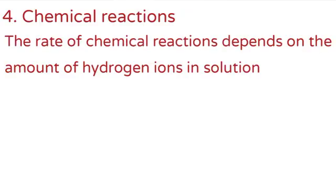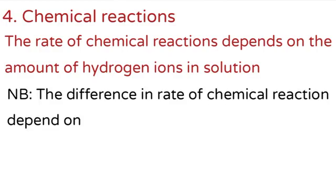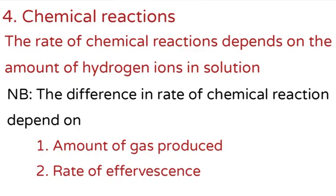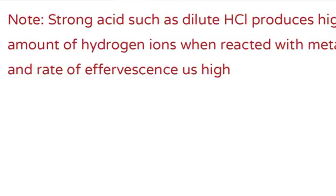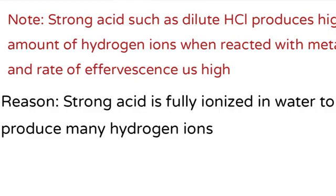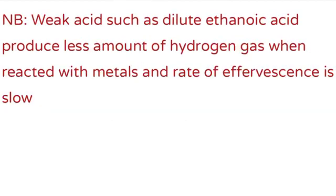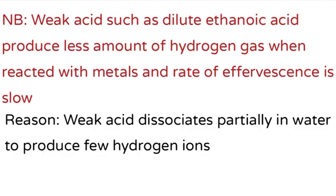Factor number four is chemical reactions. The rate of chemical reaction depends on the amount of hydrogen ions in solution. The difference in rate of reaction depends on the amount of gas produced and the rate of effervescence (bubbles). Strong acid, such as dilute hydrochloric acid, produces a high amount of hydrogen gas when reacted with metals, and the rate of effervescence is very high — because strong acid is fully ionized in water to produce many hydrogen ions. A weak acid, such as dilute ethanoic acid, produces less hydrogen gas and the rate of effervescence is very slow, because weak acid dissociates partially in water to produce fewer hydrogen ions.